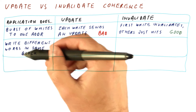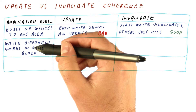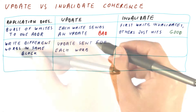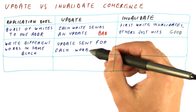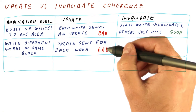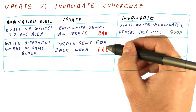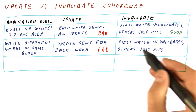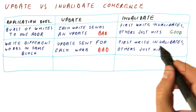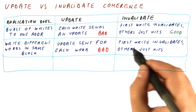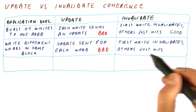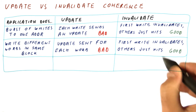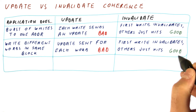Another common behavior is when an application writes to different words in the same block — for example, when we are initializing the block and writing to every word in it. If that block is shared, an update protocol will send an update for each word that we write. That is bad because one cache line worth of writes might result in something like 10 updates. In an invalidation-based protocol, the first write invalidates the other copies, and the remaining accesses to the same or different words are just cache hits with no bus traffic. So this is again good for invalidate, bad for update.